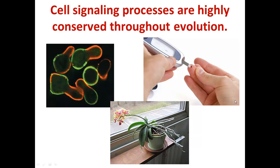Here you can see someone testing their blood sugar. Diabetes is a disease caused by improper insulin signaling — this is an example of signaling that occurs in humans where insulin regulates glucose metabolism. There are many different types of cell signaling processes and almost every part of the cellular life cycle is regulated by cell signaling.